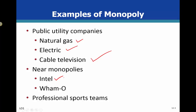There are also near-monopolies, like Intel with certain types of processing chips, and Whammo, which has the patent on Frisbees — so they're kind of like a monopoly on that. There are also situations like professional sports teams, which have a monopoly in their region or smaller market.